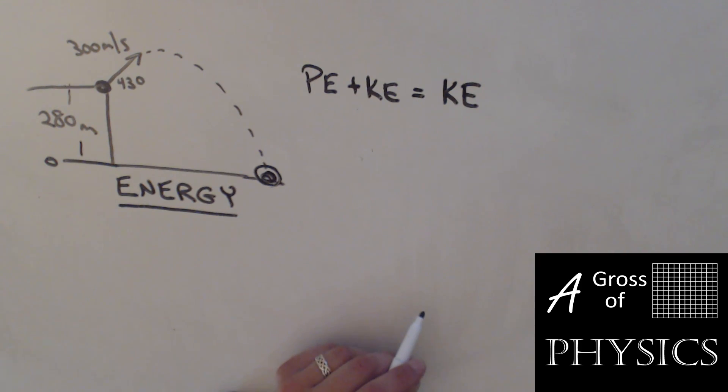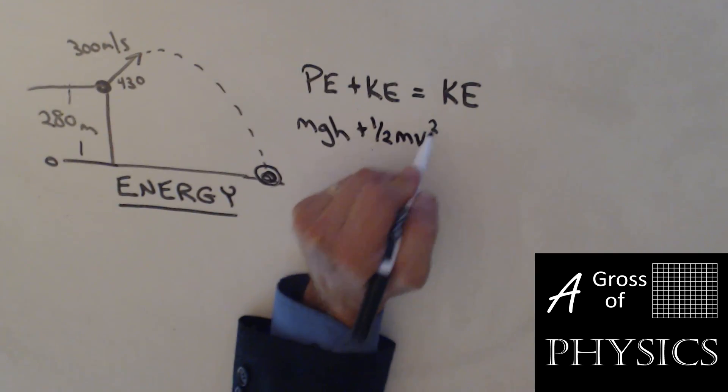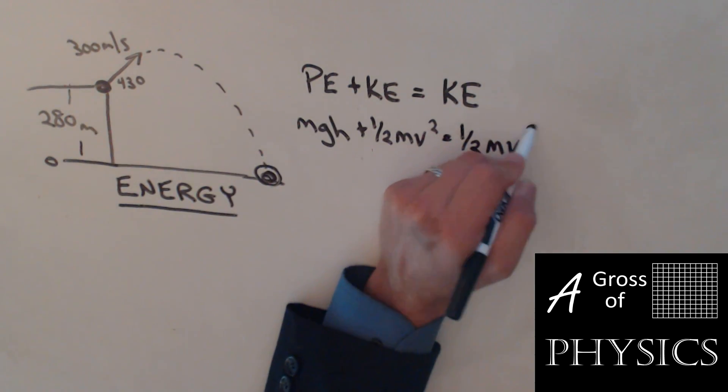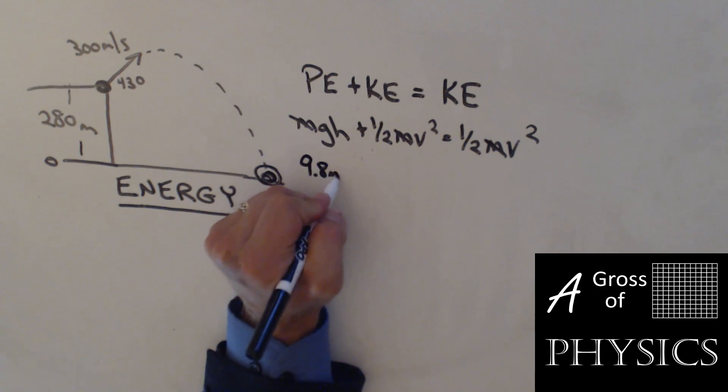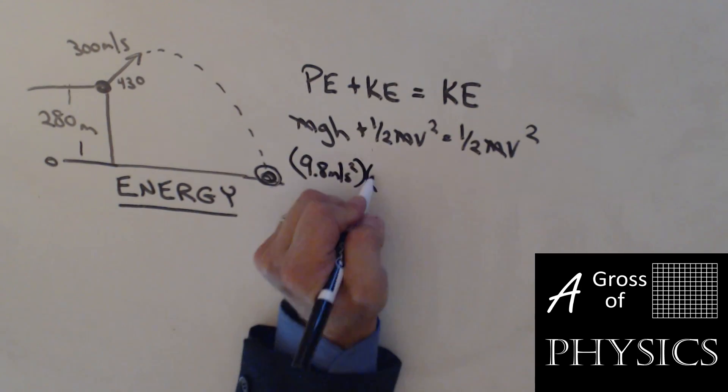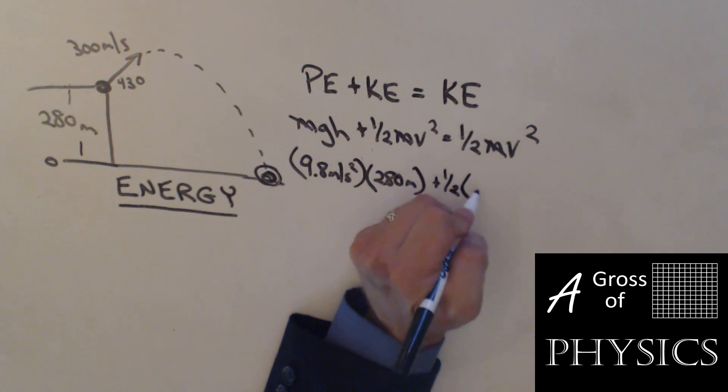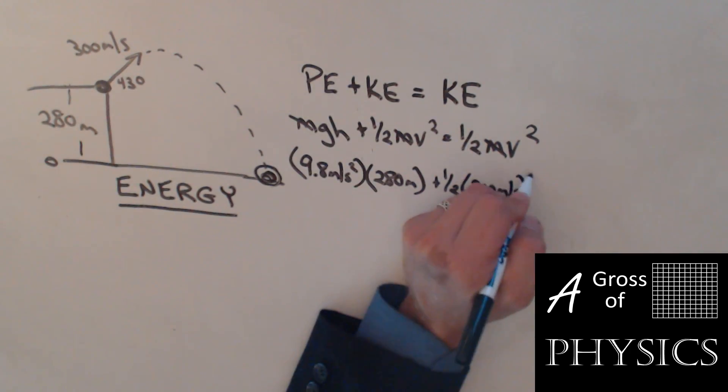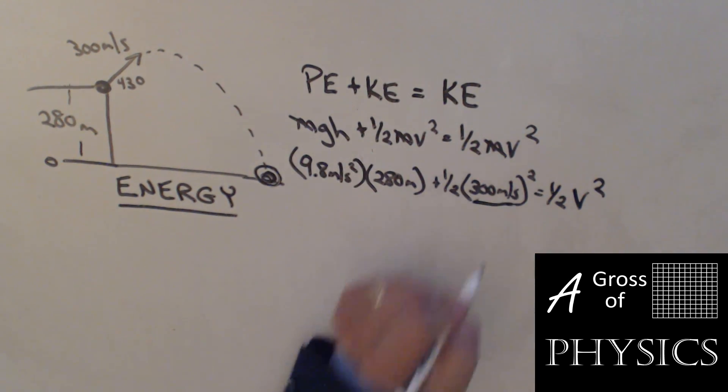We have no idea what the mass of the projectile is, but we know PE is mgh plus one-half mv squared equals one-half mv squared. The masses cancel, and we're left with gh, so 9.8 meters per second squared times 280, plus one-half times 300 meters per second quantity squared equals one-half v squared. The reason we didn't have to break that into components is because kinetic energy is concerned with the speed, not the velocity. So we don't have to worry about perpendicular vectors. It's just the scalar quantity.